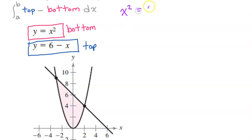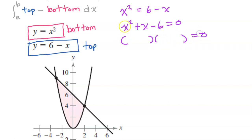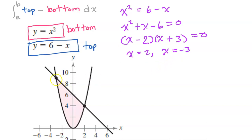Setting x squared equal to 6 minus x, adding x to both sides and subtracting 6 gives x squared plus x minus 6 equals 0. This factors as (x plus 3)(x minus 2) — using a negative 2 and a positive 3 to get a positive 1 for the middle term. Using the zero product property, x equals 2 and x equals negative 3. So the area between the curves will be the integral from negative 3 to 2 of the top function minus the bottom function.